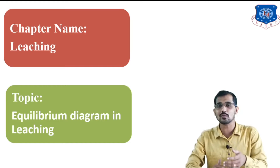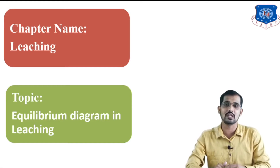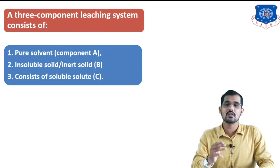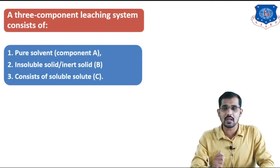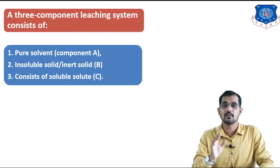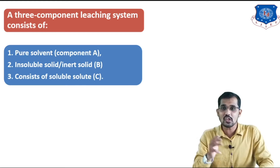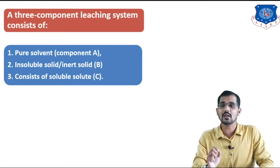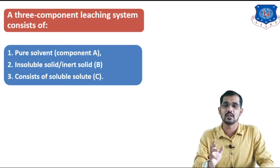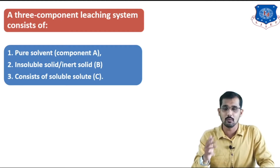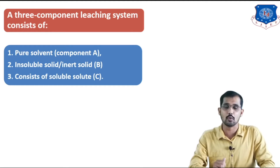In this lecture, we are going to see the equilibrium diagram of leaching. Here I will consider a three-component system. The first component is pure solvent, that is component A. Pure solvent means the initial amount of solute in this solvent is equal to 0 — the weight fraction of the solute initially present in the solvent is 0. After that, insoluble solid or inert solid, that is component B. And lastly, the solid particle which we want to remove from the solid is given by component C.